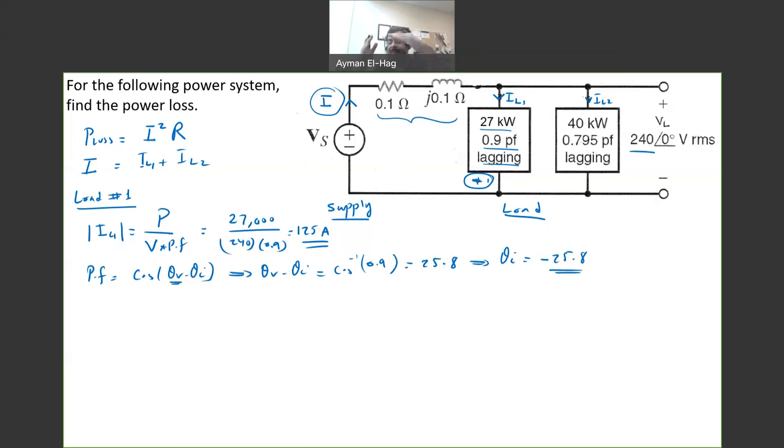When it is lagging, it means that the angle of the current lags the voltage. So, the voltage is zero, the angle, as our reference, so the current angle will be negative. From this, we now found IL1, which is 125 angle of minus 25.8. Done.